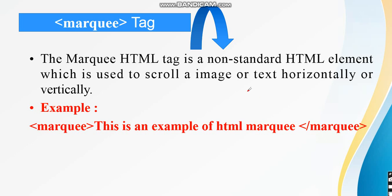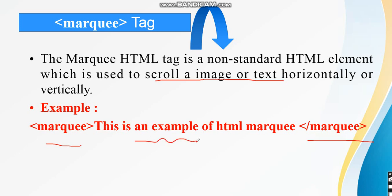Next, the marquee tag. The HTML marquee tag is a non-standard HTML element which is used to scroll an image or text horizontally or vertically. If you want a scrolling text to appear on your web page, you are going to use this tag. You write the opening tag and closing tag, and in between you write the content which must appear in a scrolling format.